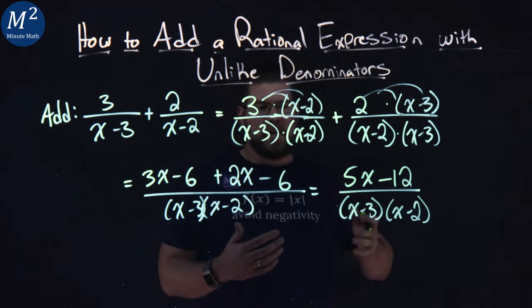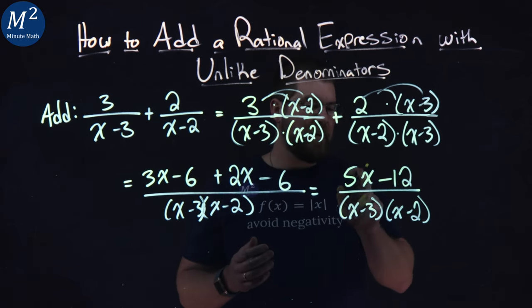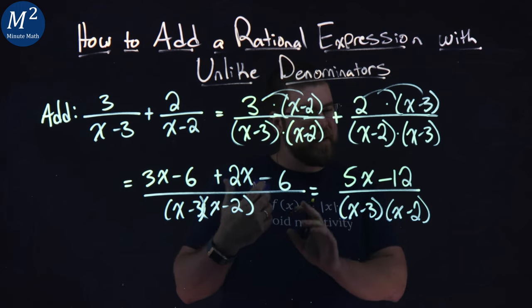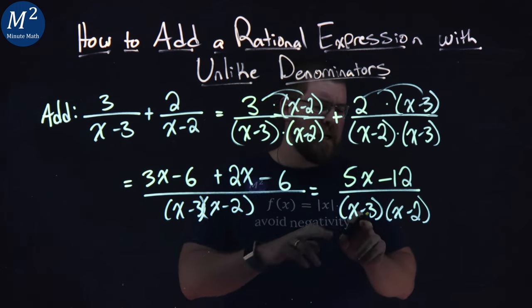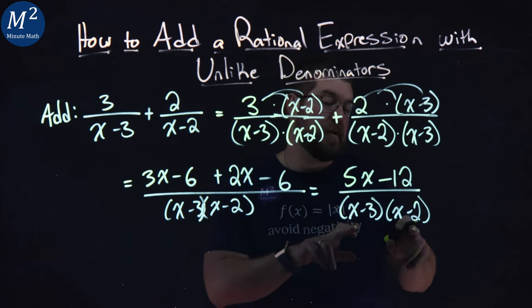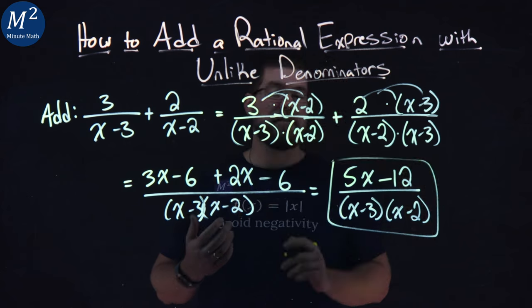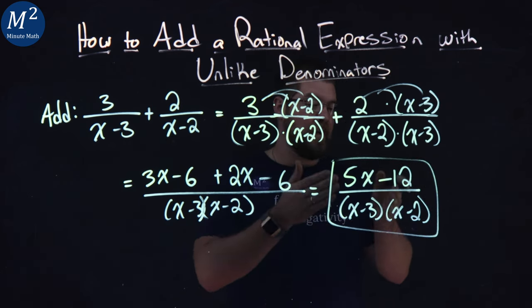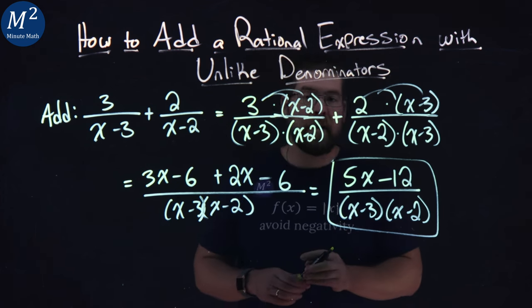Now from here, sometimes you might be able to see a way to cancel. If I pull a 5 out, nothing's really going to happen. If I pull a 5 out of the 12, I can't really do that. It doesn't go evenly. They don't share a common number that we can pull out there to get maybe x minus 3 and x minus 2 to cancel. So we're actually kind of done here. This whole expression simplifies to be a 5x minus 12 over an already in factored form in the denominator, x minus 3 times x minus 2.